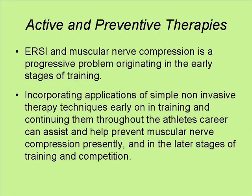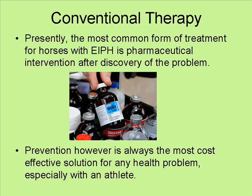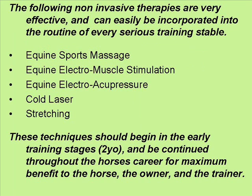Active and preventive therapies. ERSI and muscular nerve compression is a progressive problem originating in the early stages of training. Incorporating applications of simple, non-invasive therapy techniques early on in training and continuing them throughout the athlete's career can assist and help prevent muscular nerve compression. Presently, the most common form of treatment for horses with EIPH is pharmaceutical intervention after discovery of the problem. However, prevention is always the most cost-effective solution, especially with an athlete. The following non-invasive therapies are very effective: equine sports massage, equine electro-muscle stimulation, equine electro-acupressure, cold laser, and stretching. These techniques should begin in the early training stages — two-year-olds — and be continued throughout the horse's career for maximum benefit to the horse, the owner, and the trainer.